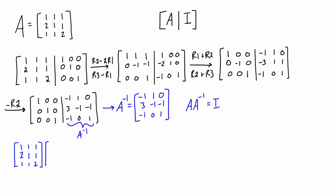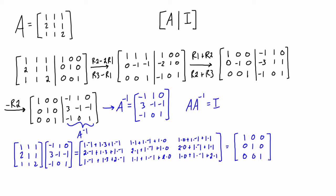So we can just set that up here and when we expand out each element of the product we're going to find that this is in fact equal to the identity matrix. So it looks like we've done this correctly.